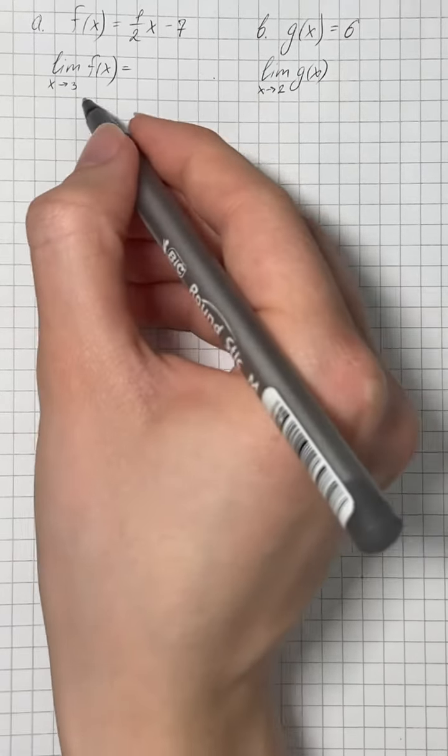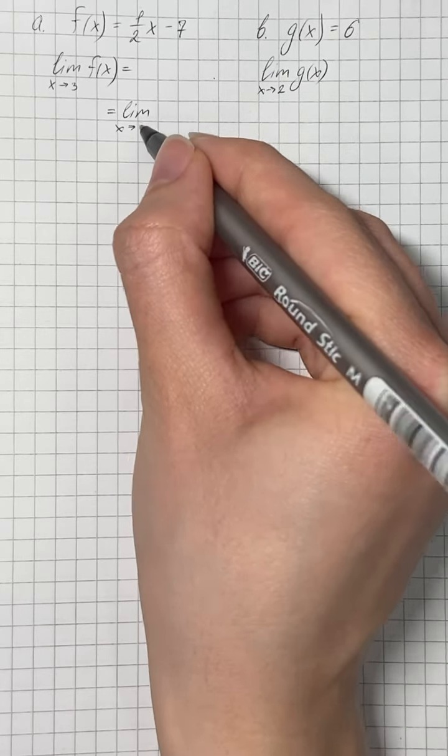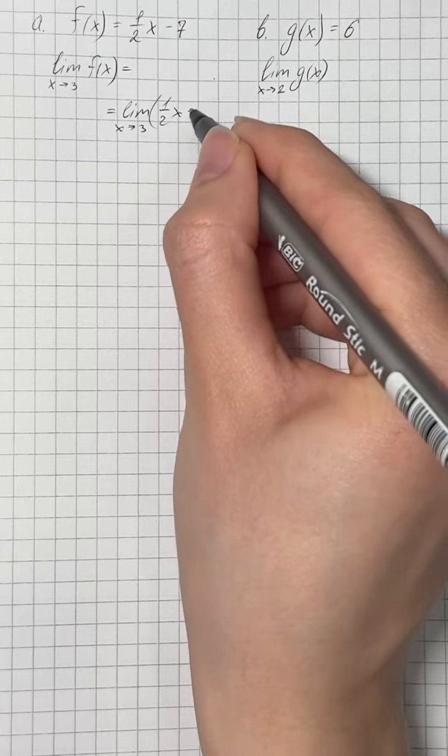So that's going to be limit as x approaches 3 of one half x minus 7.